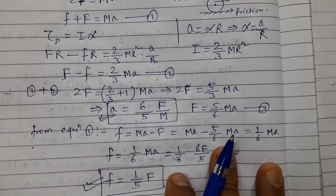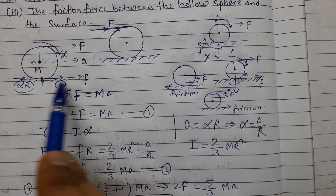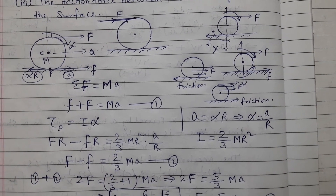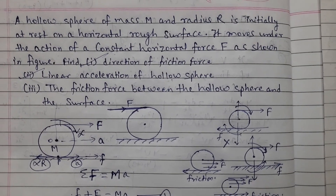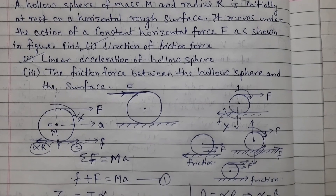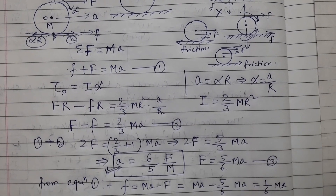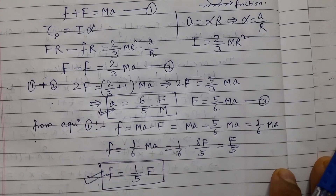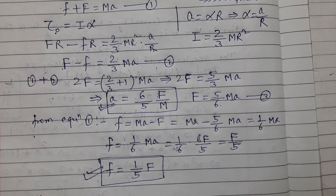So to summarize: the acceleration is 6/5 × F/M, and the direction of friction force in this case is forward, as we discussed. The friction force value is F/5. I hope there is no confusion in this problem.